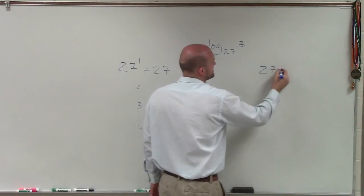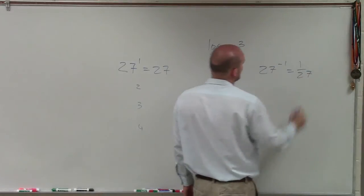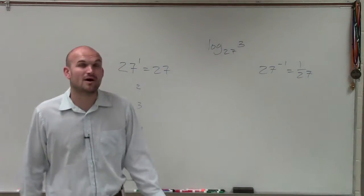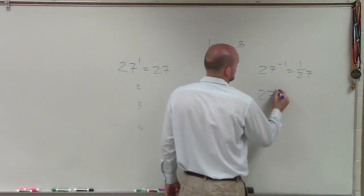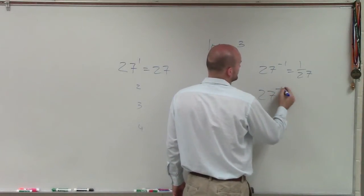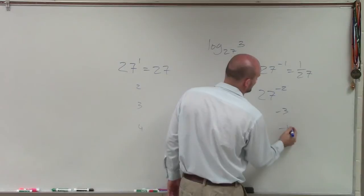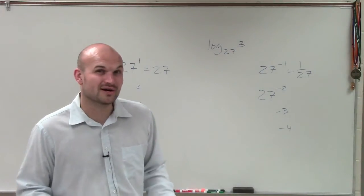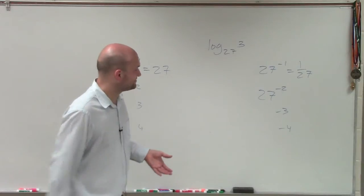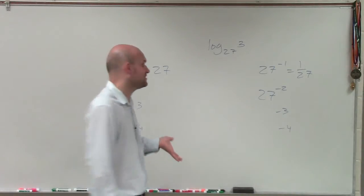If I do 27 to the negative first power, that's 1 over 27, which is a decimal less than 1. And if I do any other negative exponent like negative second, negative third, or negative fourth, those numbers are going to keep getting smaller and smaller toward 0.